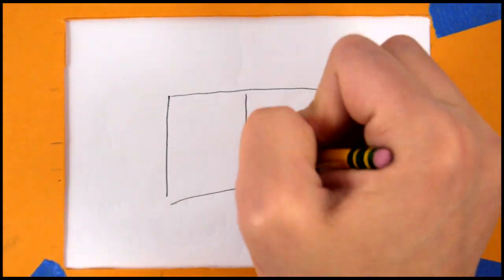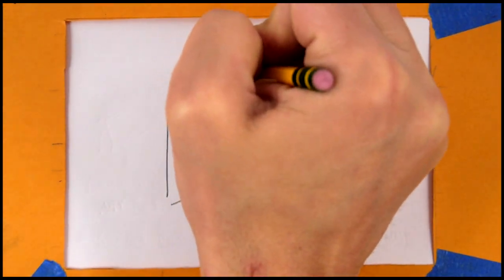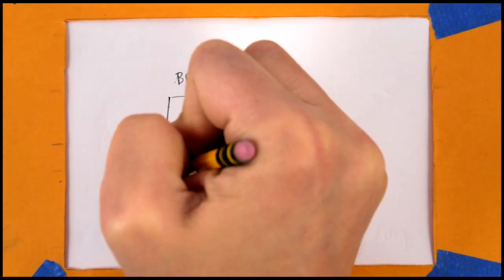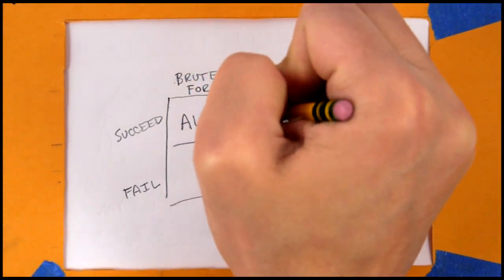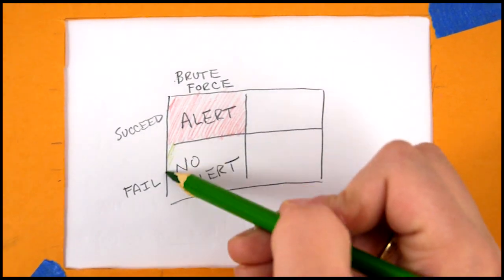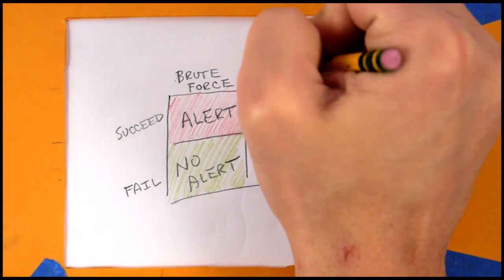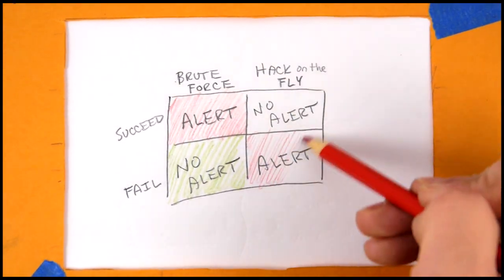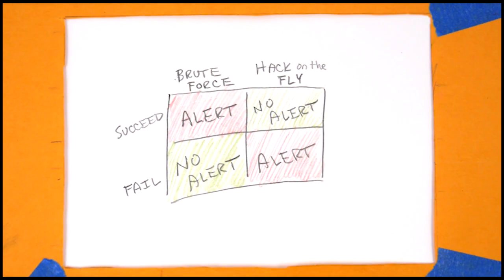It is worth taking a moment to clarify when the target is actually alerted to the hacker's illegal hacking attempts, and when they are not. Succeeding a brute force attempt will alert the target as well as cause potential damage, while failure will not alert the target. A successful hack on the fly attempt will not alert the target as information is gathered, but failure will immediately alert the target.